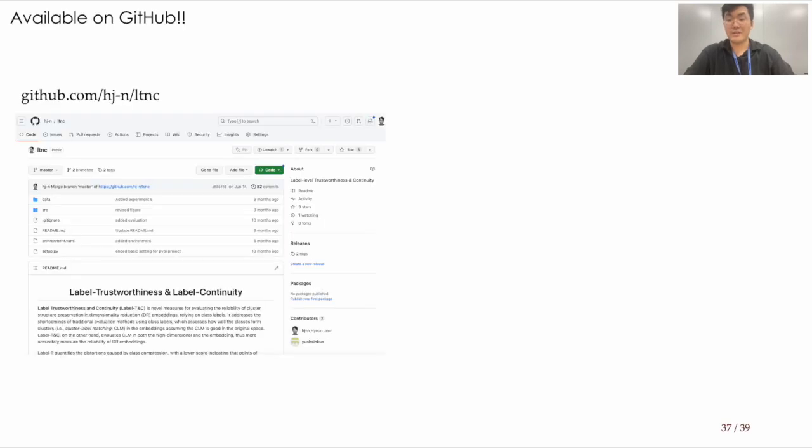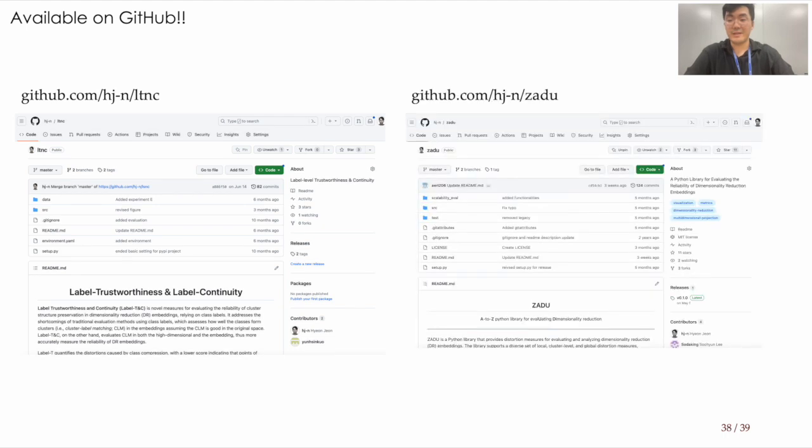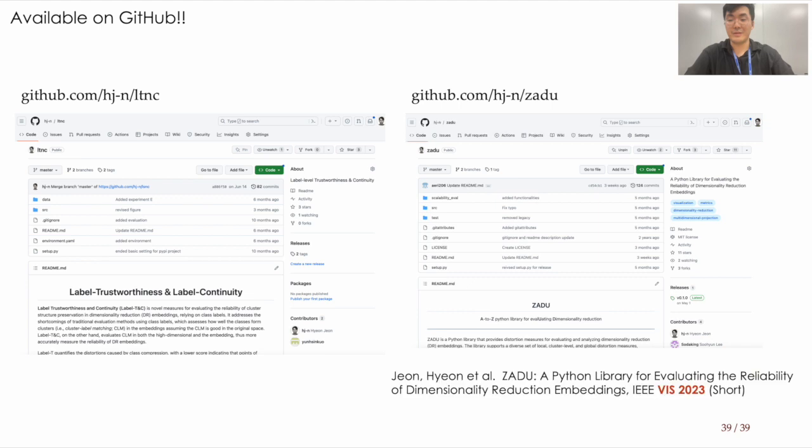One good news is that you can access label trustworthiness and continuity on GitHub. Just search for LTNC. Additionally, they are available through Jenga, a Python library offering diverse dimensionality reduction evaluation metrics. Note that Jenga will also be presented in this year's VIS. Do not miss out the presentation.